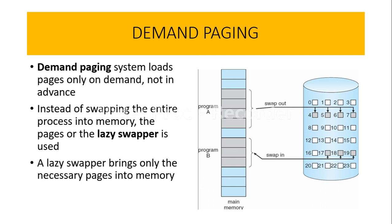As we know, the process normally resides on the disk, and whenever we want to execute it, we swap it into the main memory. The task of demand paging is to load only those pages of the process required for execution, instead of loading the entire program and wasting memory. To swap the required pages onto the main memory, we use the concept of a lazy swapper, whose task is to bring only the necessary pages into main memory.